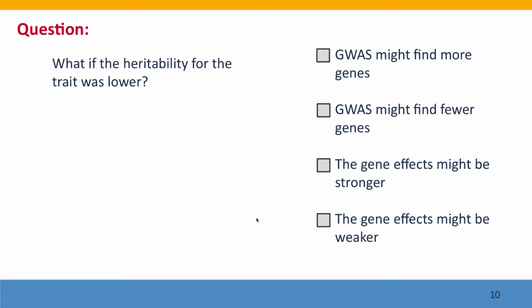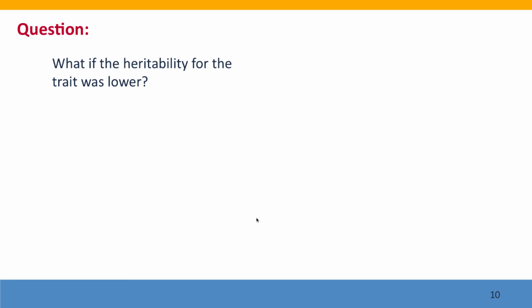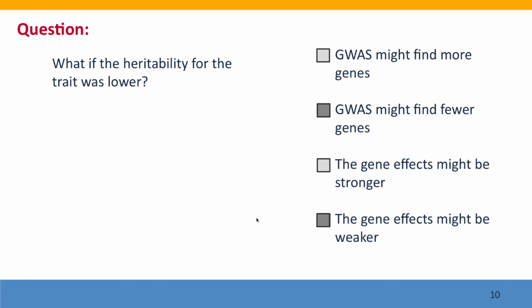Here's a question: what if the heritability for the trait was lower? In our example we were using height, which is very heritable. But if we'd been working with a trait whose heritability was lower, how would that have affected the ability of our genome-wide association study to find the responsible genes? The answer is that if heritability had been lower, the study is likely to have found fewer genes and the effects found are likely to be weaker, because the genetic causes have been diluted by environmental effects and chance effects that also contributed to the phenotypic differences.